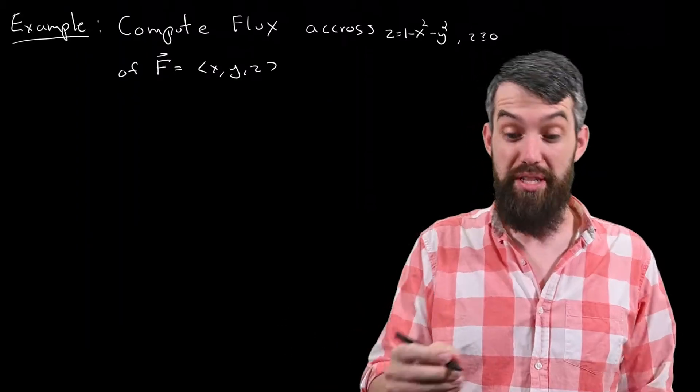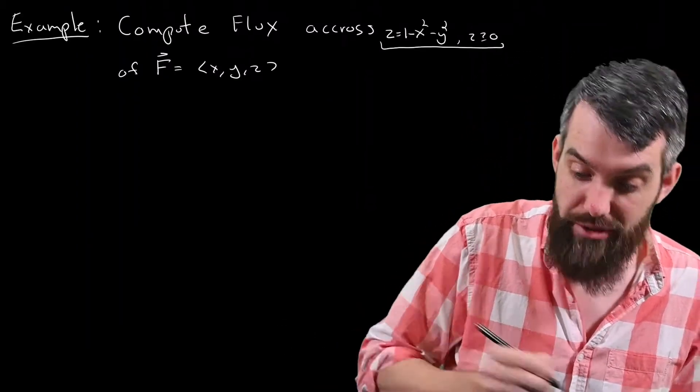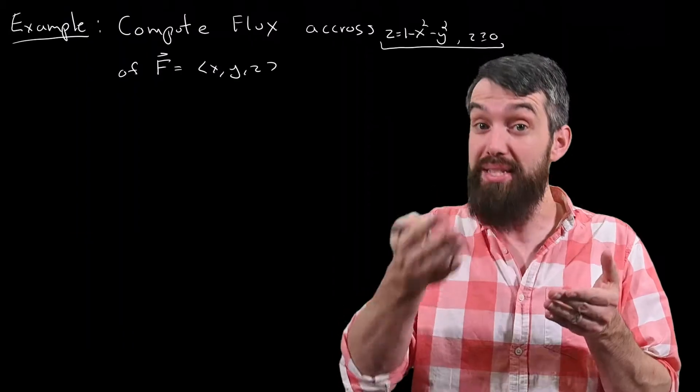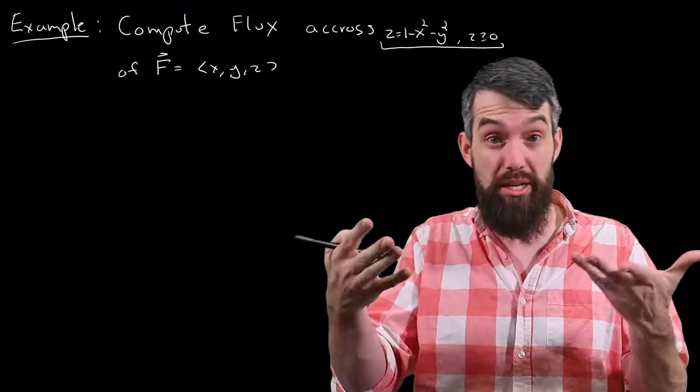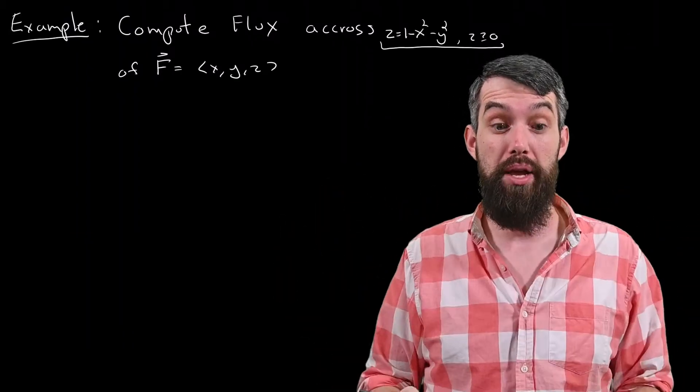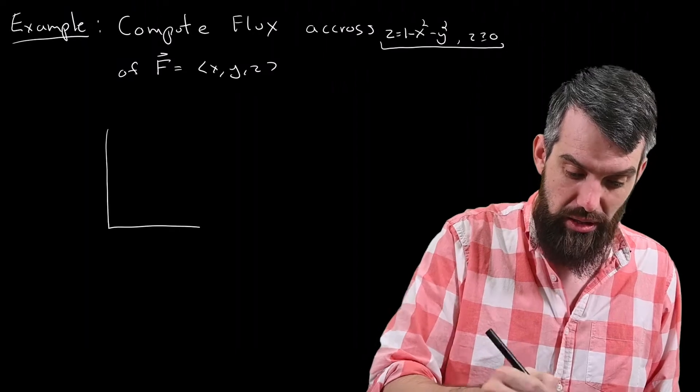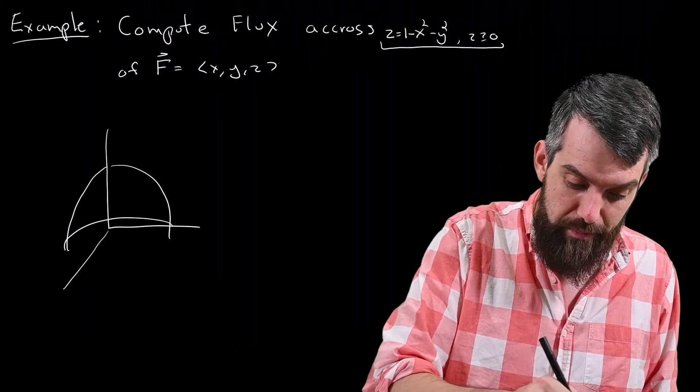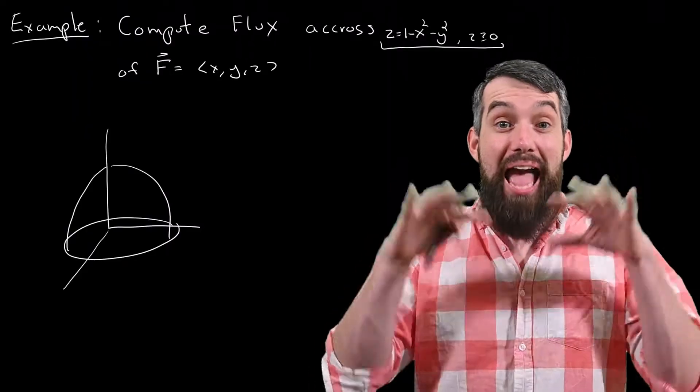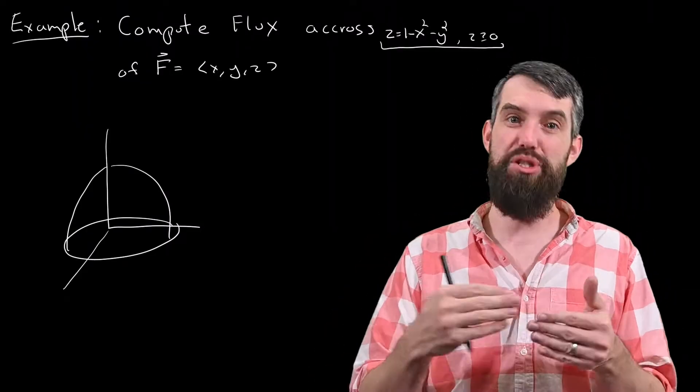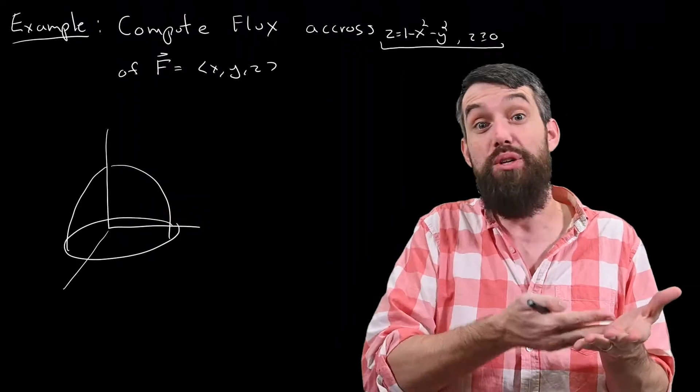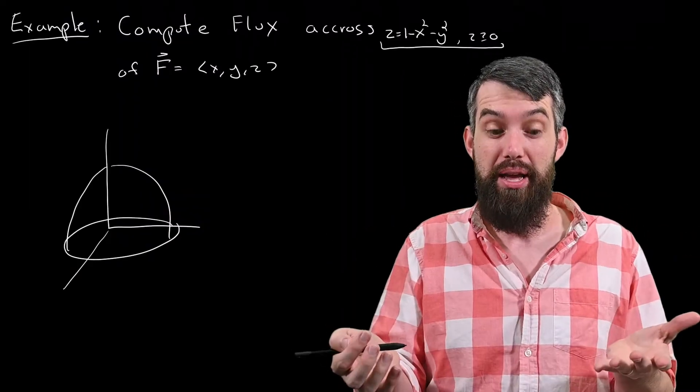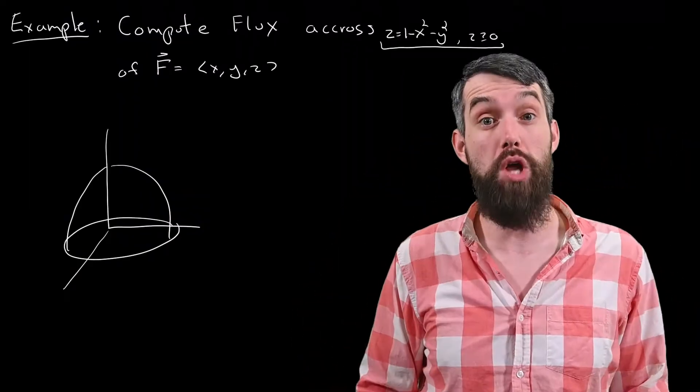The first thing I want to do is investigate what this surface actually is. This is the surface z is 1 minus x squared minus y squared, and z is also greater than or equal to 0. Graphically, what this looks like is a surface that is just a parabola. In the xy-plane, when you substitute in z equal to 0, you just get the equation of a circle, 1 is equal to x squared plus y squared, and then it looks like a parabola over top of that.